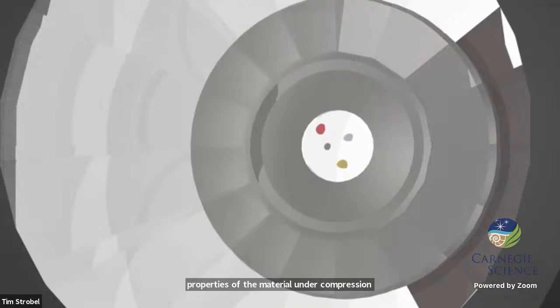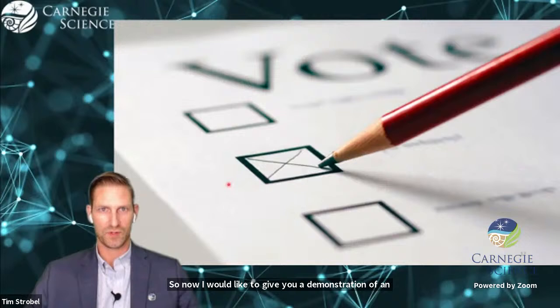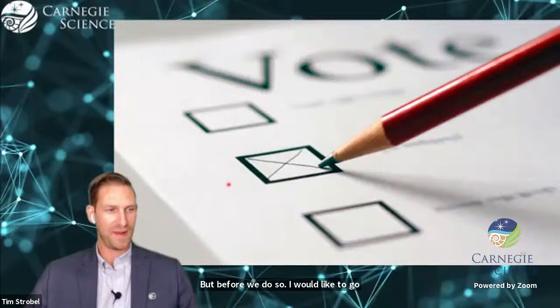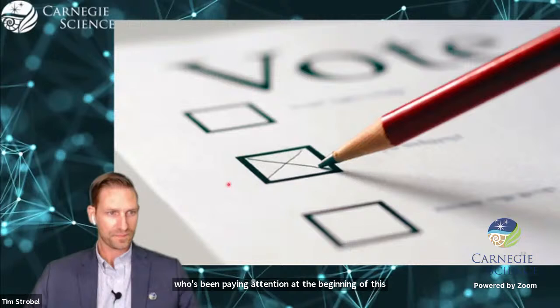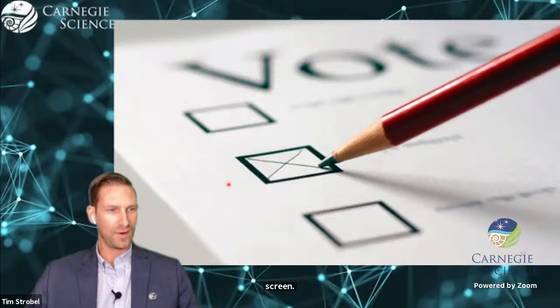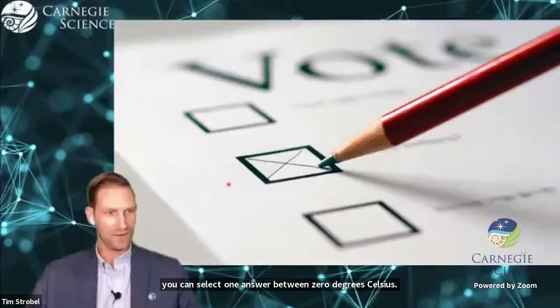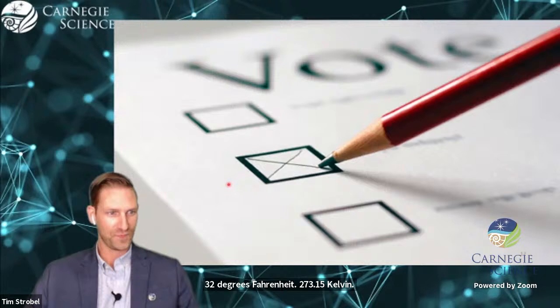So now I would like to give you a demonstration of an actual experiment inside of a diamond anvil cell. But before we do so, I would like to give a quiz to see who's been paying attention. Right now you should see a poll on your screen with a question that says, what is the freezing point of water? You can select one answer between zero degrees Celsius, 32 degrees Fahrenheit, 273.15 Kelvin, you can't trick me it's all of the above, or finally, it depends on where you live.